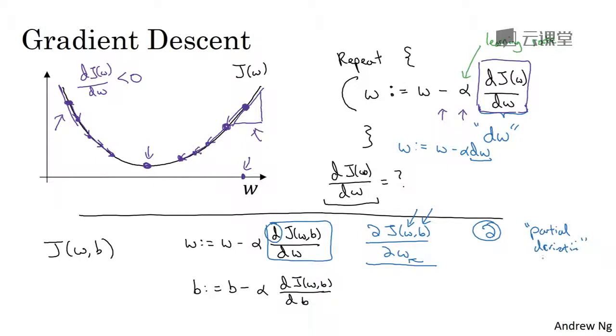But don't worry about this. And if j is a function of only one variable, then you use lowercase d. So the only difference between whether you use this funny partial derivative symbol or lowercase d as we did on top is whether j is a function of two or more variables, in which case you use this symbol, the partial derivative symbol, or if j is only a function of one variable, then you use lowercase d.